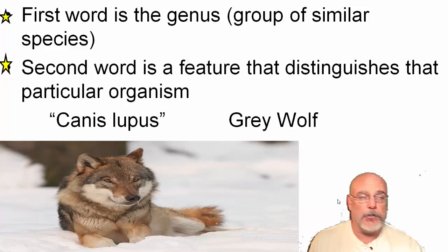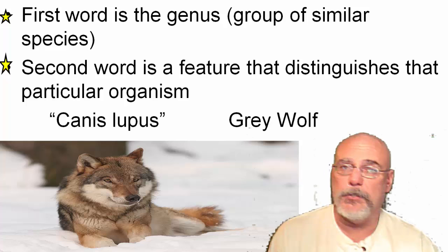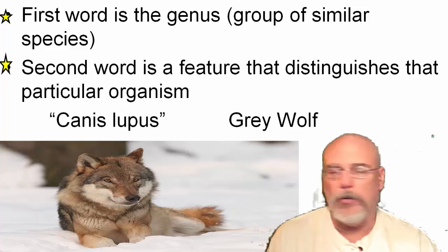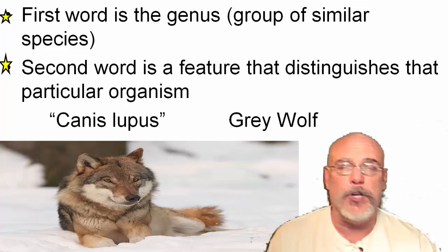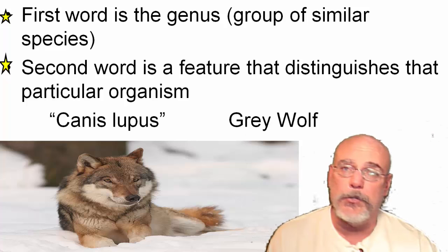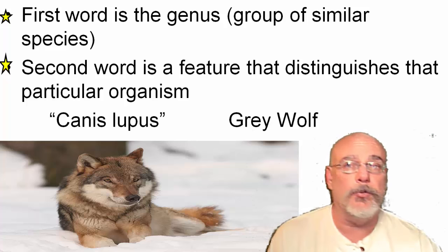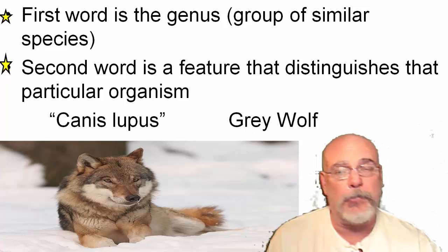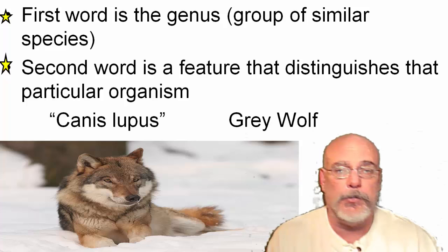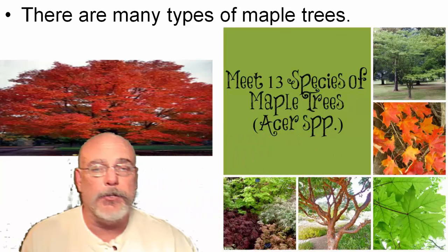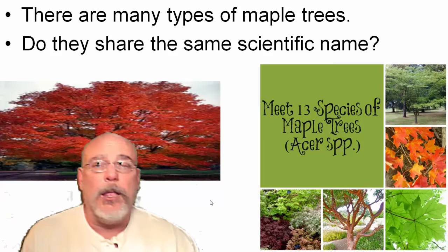If you think of 'lupus' you might also think of Harry Potter — the character Lupin, who transforms into a wolf. Many Harry Potter characters have names hinting at their animal forms if you know some Latin. Similarly, Sirius Black turned into a black dog. This also works for trees — maple trees all share the genus Acer. The Latin word for red is 'rubrum,' so the red maple is called Acer rubrum.